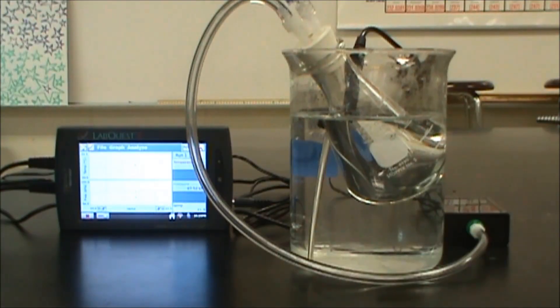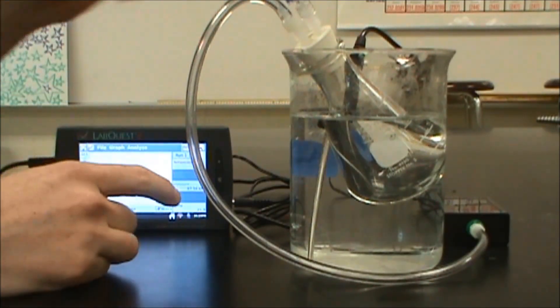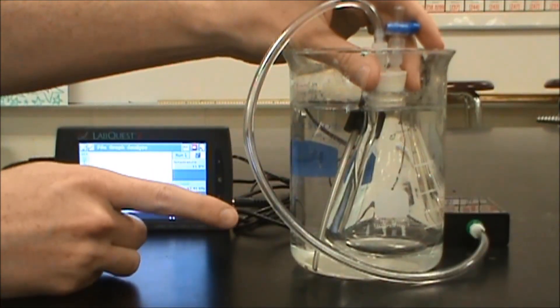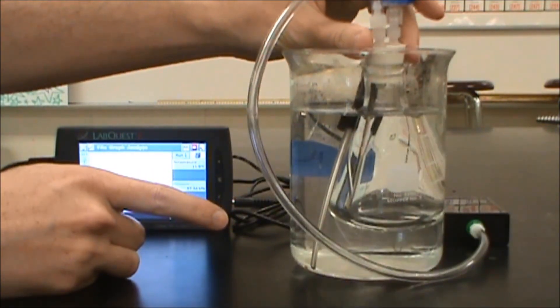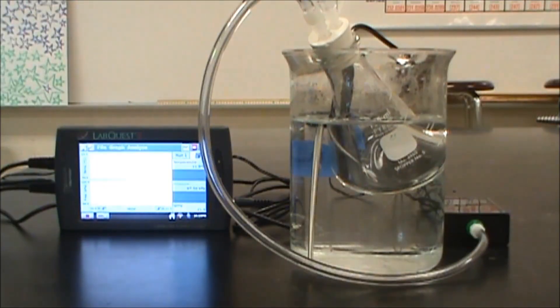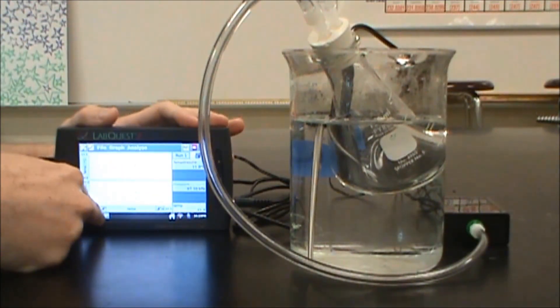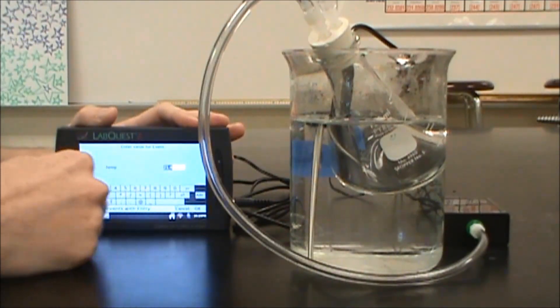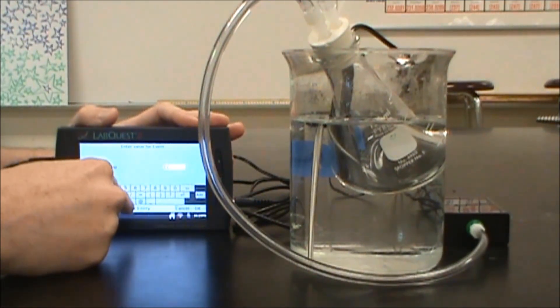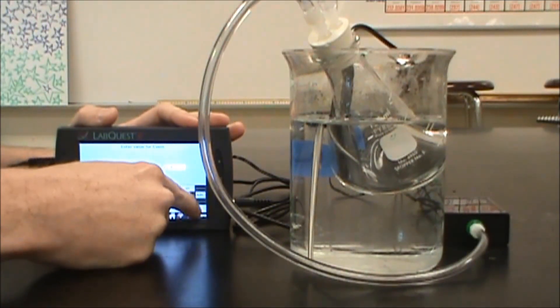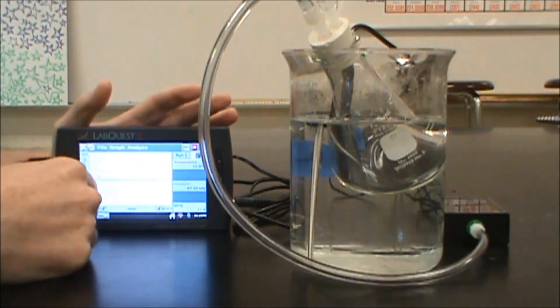When you've done this for long enough and you're satisfied that both the temperature and the temperature of the gas inside and the temperature of the water are the same, then you're going to go ahead and hit keep again. Currently my temperature reading is 11.8. So I'm going to hit keep, type in 11.8, hit OK. Now I have my two data points.